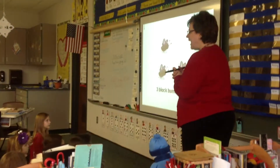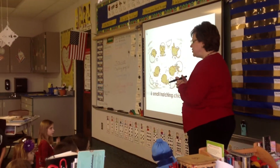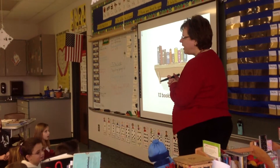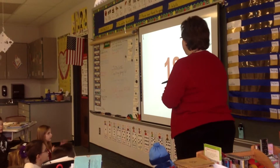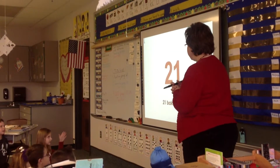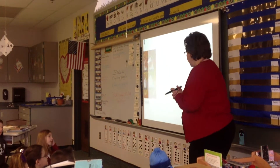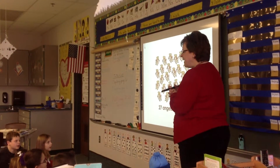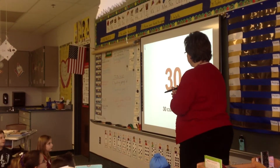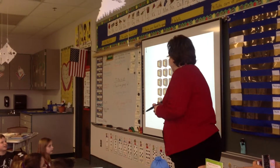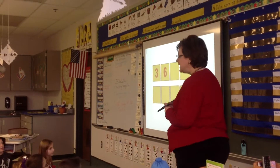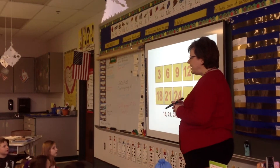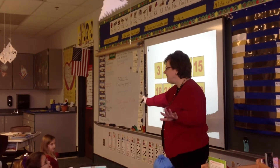Three bumblebees, six, nine, twelve books on the shelf, fifteen jelly beans, eighteen, twenty-one, twenty-four open doors, twenty-seven angels in heaven, thirty color TVs. Three, six, nine, twelve, fifteen, eighteen, twenty-one, twenty-four, twenty-seven, and thirty.